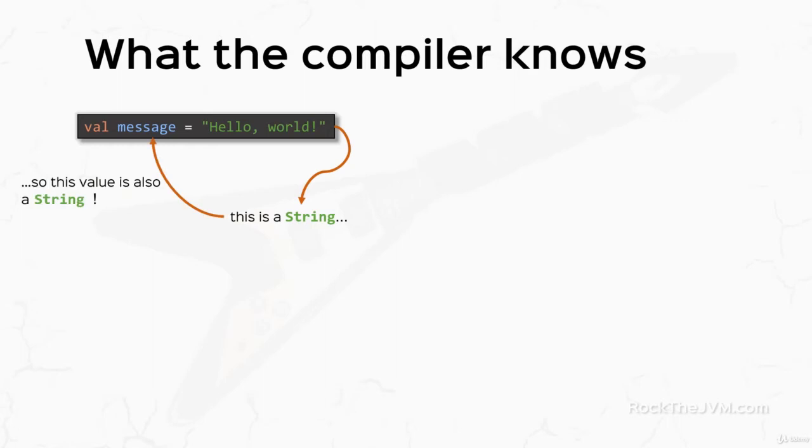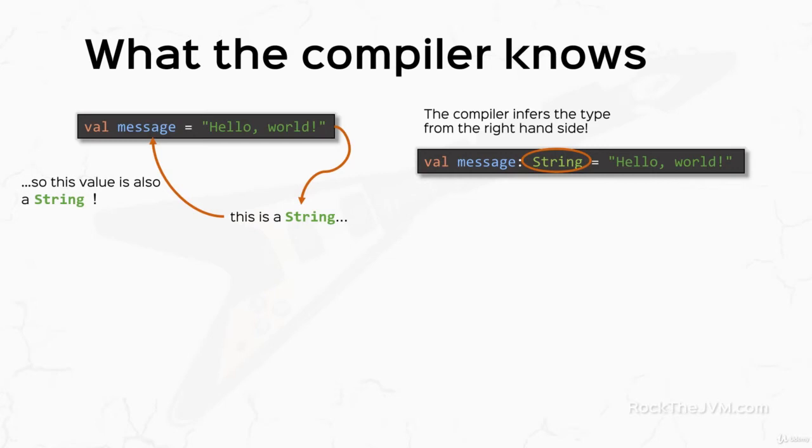All that being said, the compiler will then write a complete value definition for us without needing us to specify the type string explicitly. This is a one-step operation, but the compiler is able to do many, many steps in order to determine the correct type of our values.